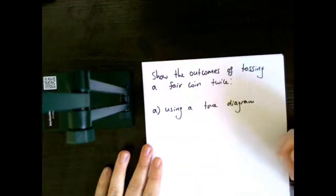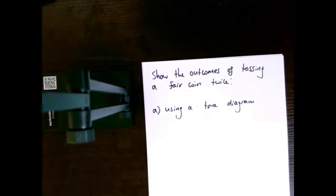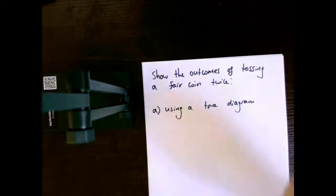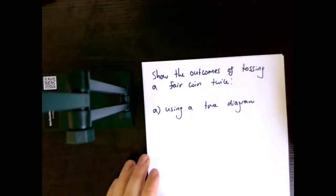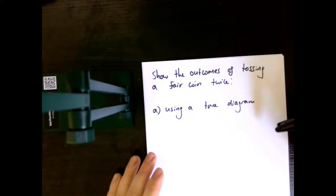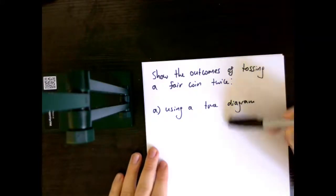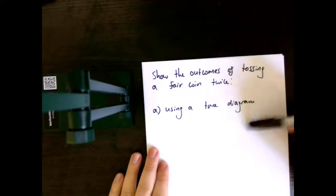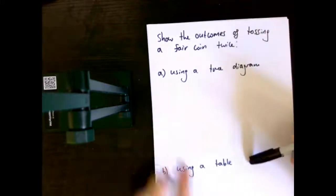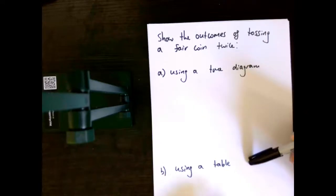So in this first one, it just says: show the outcomes of tossing a fair coin twice. I'm going to use this first with a tree diagram, and then we're going to do it using a table.